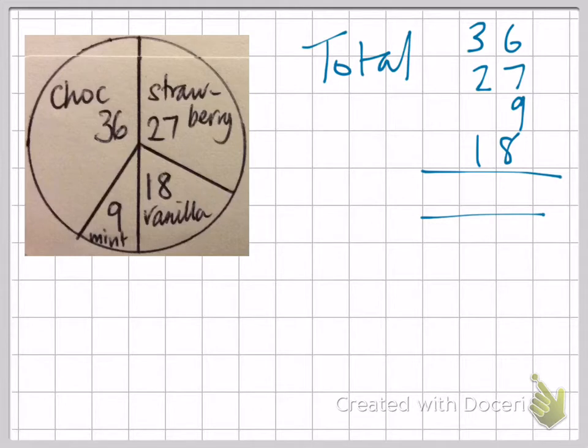When we add those together, 6 and 7 makes 13, add the 9 is 22, add the 8 is 30. So let's put our 0, carry a 3. 3 and 2 and 1 in the tens column make 6, add the 3 makes 9. So our total is 90.